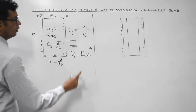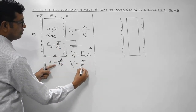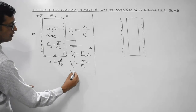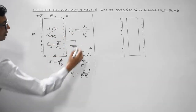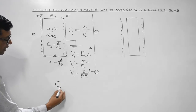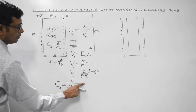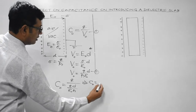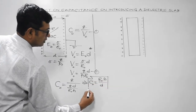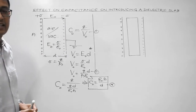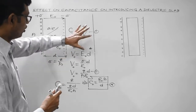In case of air or vacuum, suppose the capacitance is C₀ and the potential difference across the plates is V₀. In a uniform field, potential difference equals field strength multiplied by the distance over which the field is effective — in this case distance D. Substituting these values, we get C₀ = ε₀A/D. This is the capacitance of a parallel plate capacitor when the space between its plates is filled with air or vacuum.